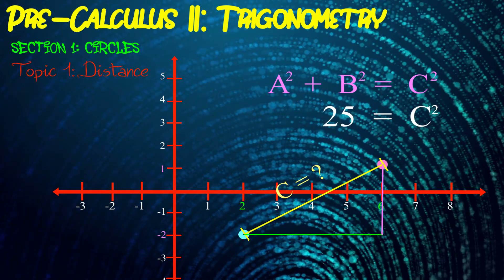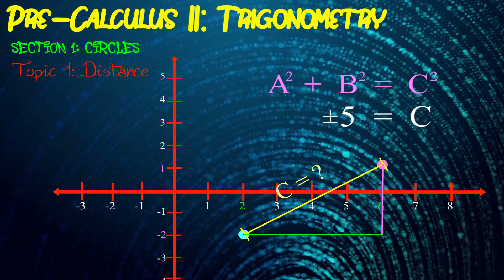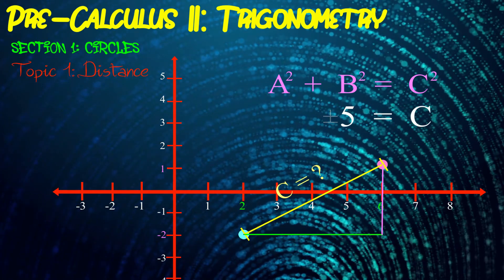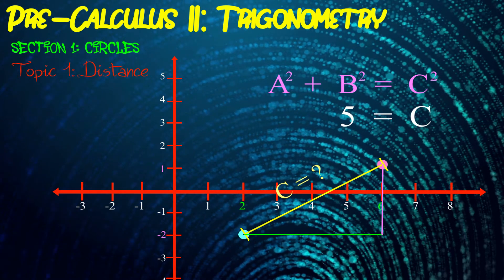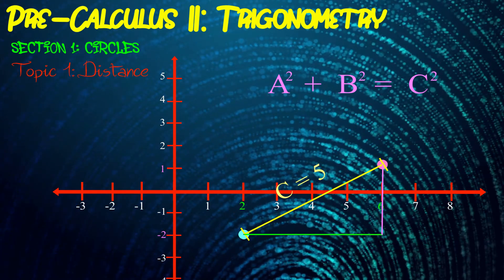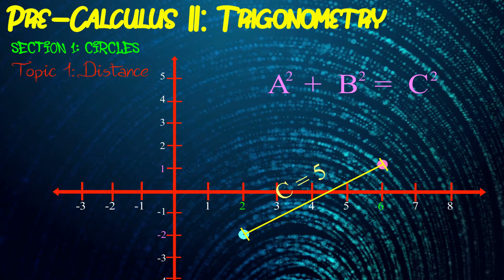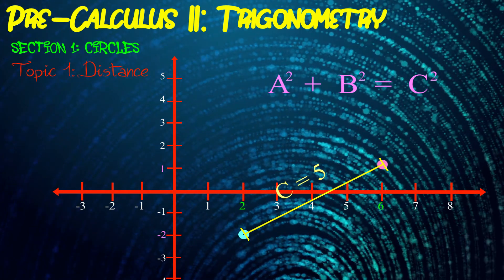Since c squared is 25, c could either be positive 5 or negative 5, but since we're talking about distance, only the positive answer makes sense. What I'm saying is that c, the length of the hypotenuse of the triangle we kind of imagined, which is also the length of the line connecting the two dots, and therefore the answer to our question, is just equal to 5.